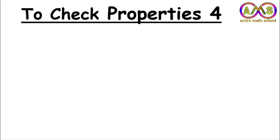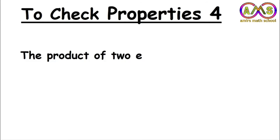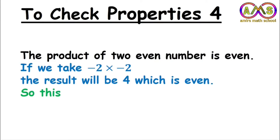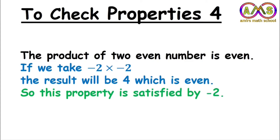Let's see Property 4. This is a very special property — it is not applicable for all even numbers. The product of two even numbers is even. If we take minus 2 times minus 2, the result is 4, which is even. So this property is satisfied by minus 2. But if we take one negative and one positive even number, this property will not be satisfied. So this property is not satisfied by all even numbers.